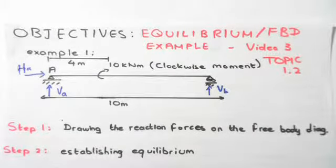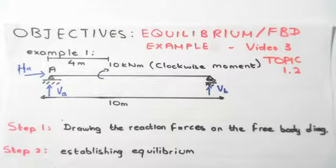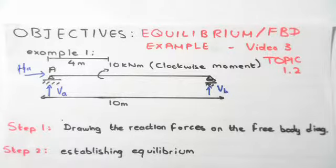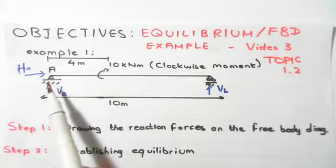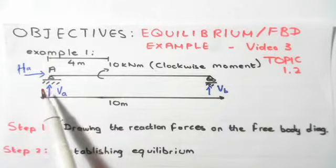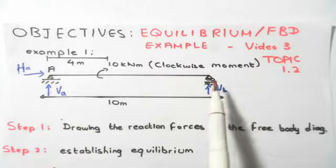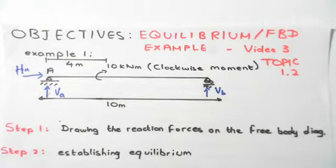The following video is an example of equilibrium and free body diagrams. Imagine we have a simply supported beam — ignore everything in blue for now. We have a pin support on the left-hand side and a roller support on the right-hand side. This is known as a simply supported beam.